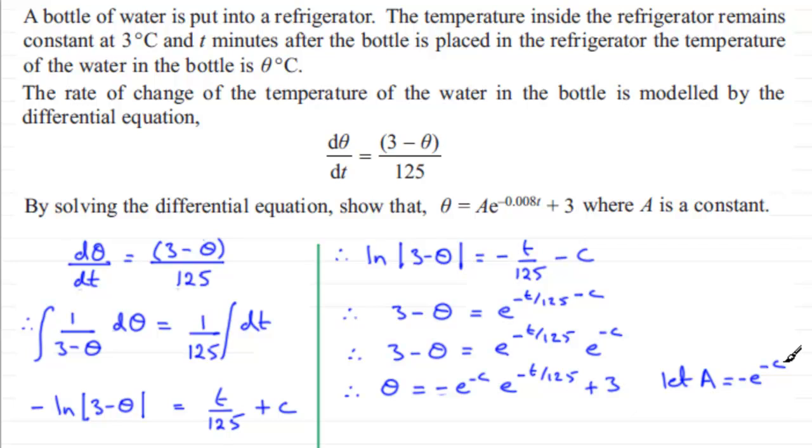So I therefore have θ equals A multiplied by e to the power (minus t over 125). Now minus 1 over 125 is exactly the same in decimal form as minus 0.008, and then we've got the t and then we've got the plus 3. So there you have it, alright.